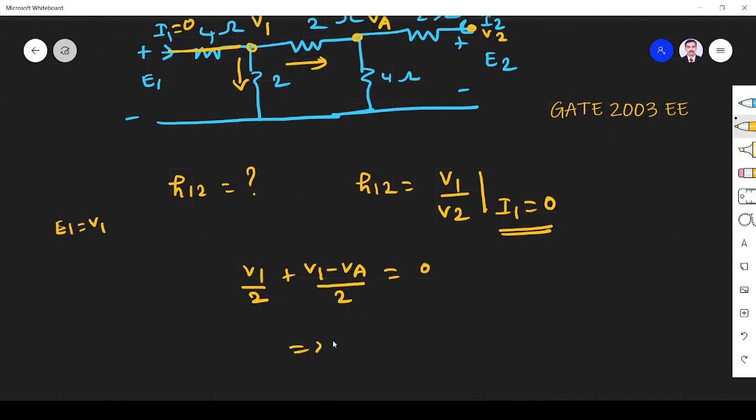This implies v1 is equal to va by 2. This is equation number 1.